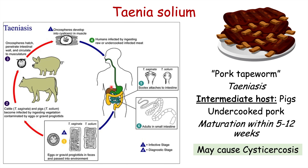When cysticercae end up in certain organ systems, the patient's immune system often clears them. But when cysticercae are in the eyes or central nervous system, the immune system often does not take care of them. So the patient ends up with cysticercae within the brain or eyes, leading to the condition known as neurocysticercosis, which has particular signs and symptoms discussed in another lesson.